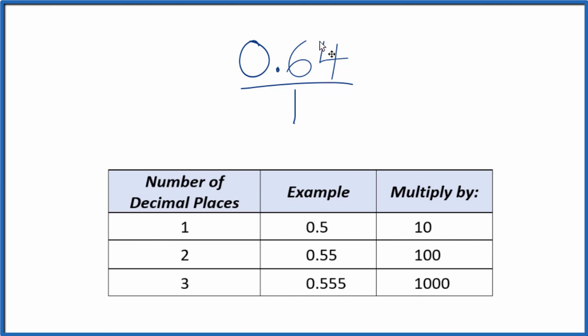What would be nice is to get this 0.64 to a whole number, and we have two decimal places, 1, 2. So with two decimal places, we're going to multiply by 100. That will give us a whole number.